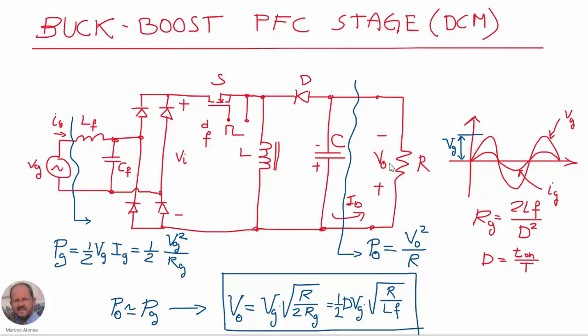We are going to obtain the output of our converter by equaling input power and output power. The average input power is one-half times the peak voltage of the line times the peak current. Because we know that the converter is behaving like a resistance from the point of view of the line, we can obtain this expression because ig is calculated as vg divided by Rg.